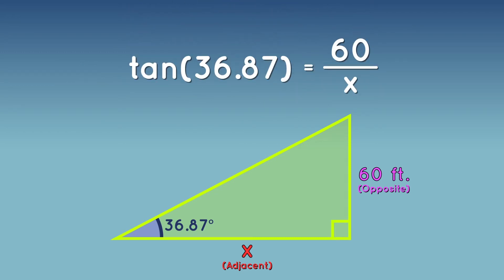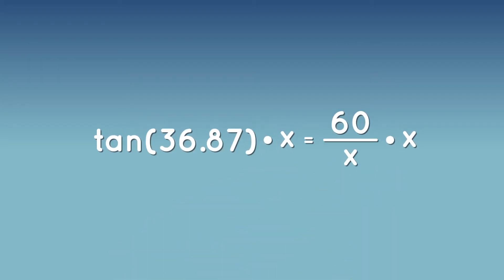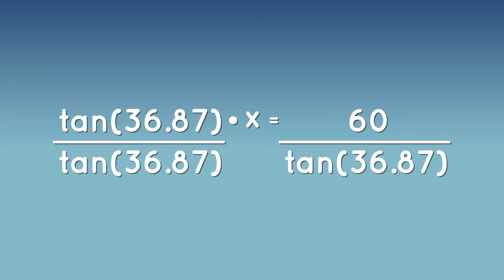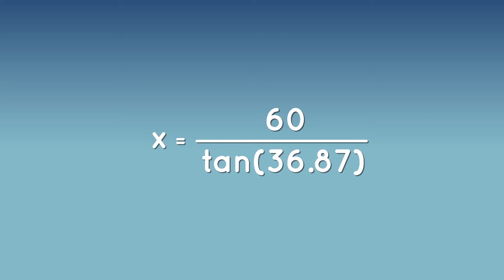The tangent of our angle, 36.87 degrees, is equal to our opposite side, 60, over our adjacent side, x. Now it's time for some simple algebra. To get x alone, we first multiply both sides by x. Then we divide by tangent of 36.87. We end up with x equals 60 divided by the tangent of 36.87.